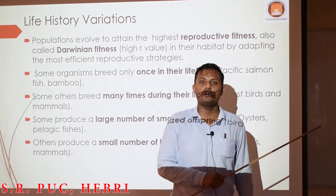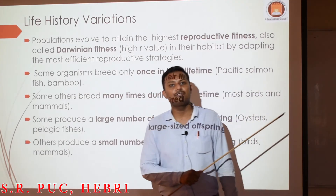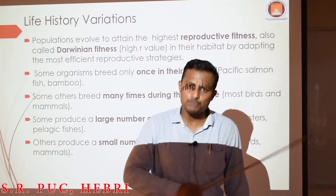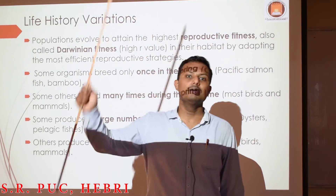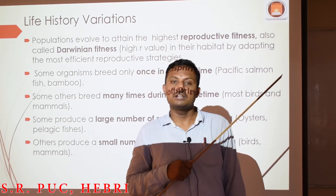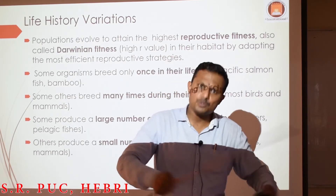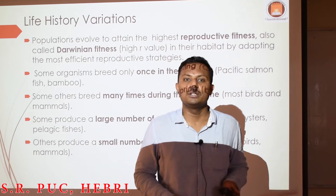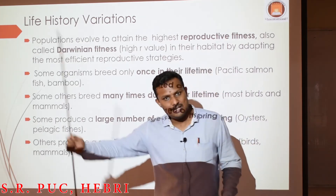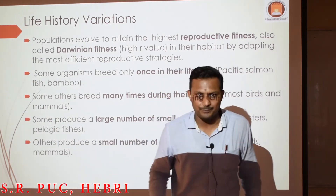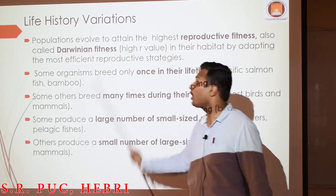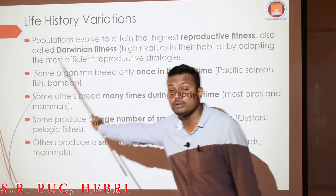When the population is following the most efficient mode of reproduction, it must be able to produce a good number of individuals as offspring, meaning population size keeps on growing. Because they have adapted to the most efficient mode of reproduction, the birth rate is always higher compared to the death rate. That is what is called Darwinian fitness or reproductive fitness — and this can be an important one-mark question.